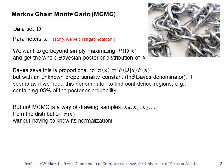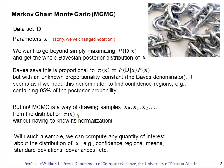But no, it's not true. MCMC, Markov Chain Monte Carlo, is a way of drawing samples X1, X2, X3 and so on from the distribution pi of X without actually having to know its normalization. So that's a very magical thing, and we'll see how it comes about.